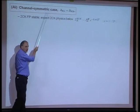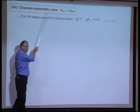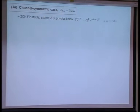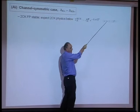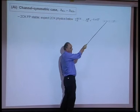Let's begin then by looking at the channel-symmetric case, where JK left equals JK right. We know that the two-channel Kondo fixed point will be stable. As we put on the scaling, we expect two-channel Kondo physics below a two-channel Kondo scale on the order of JK effective times e to the minus one over rho JK effective, where rho is the lead density of states, one over 2D for a flat band of width 2D.